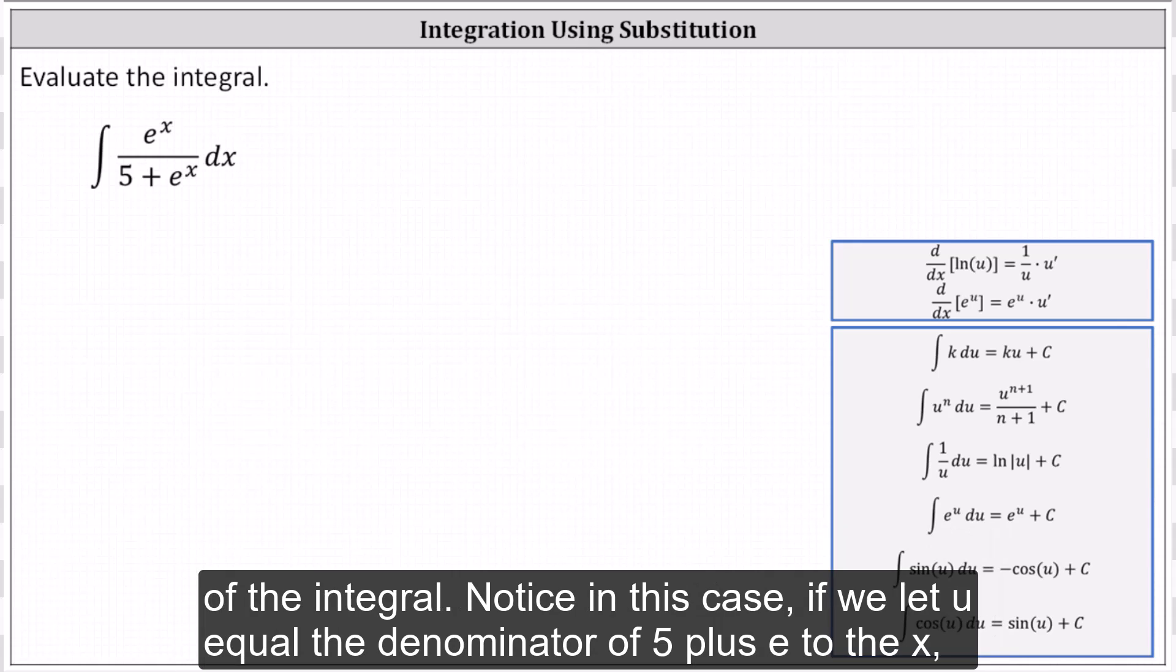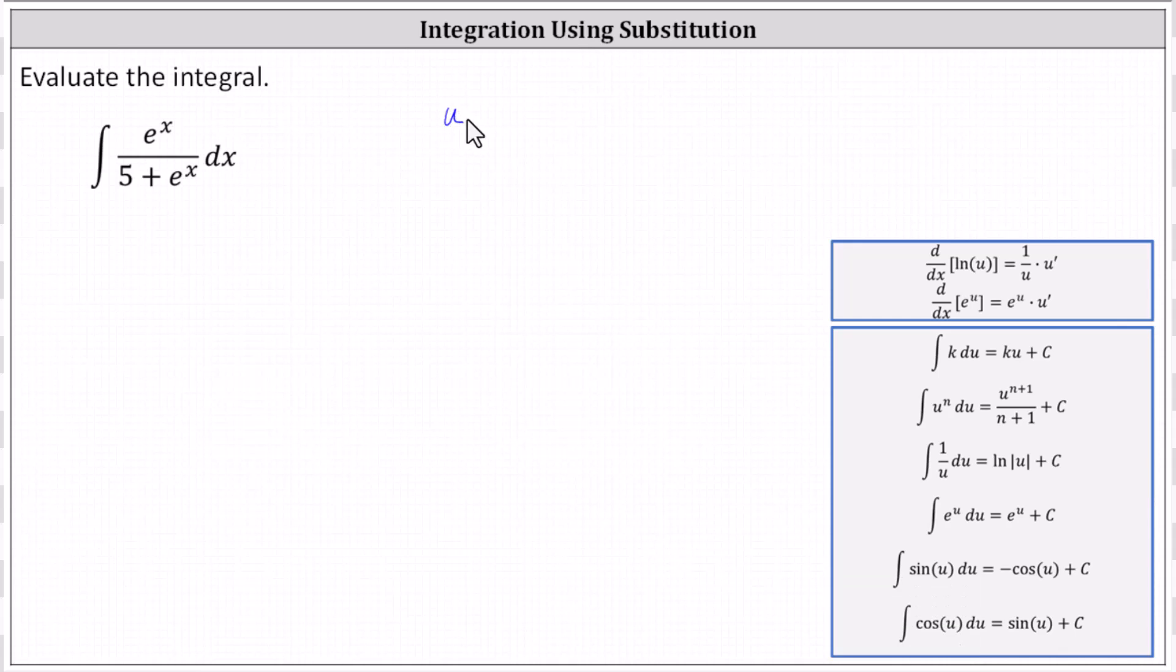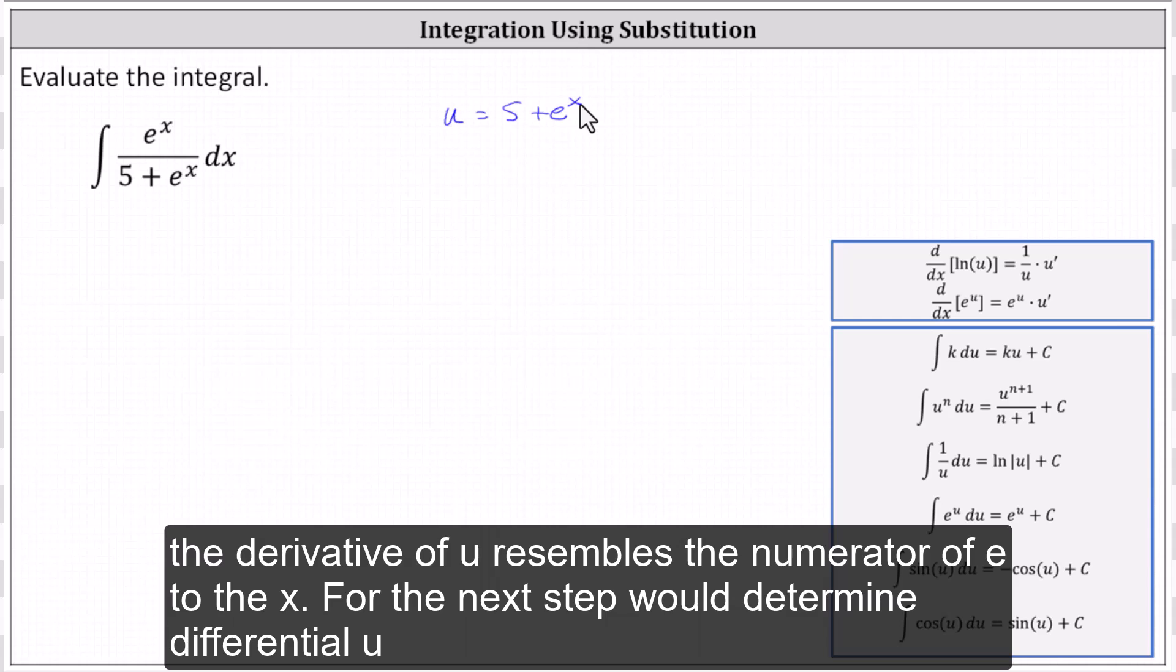Notice in this case, if we let u equal the denominator of 5 plus e to the x, the derivative of u resembles the numerator of e to the x.